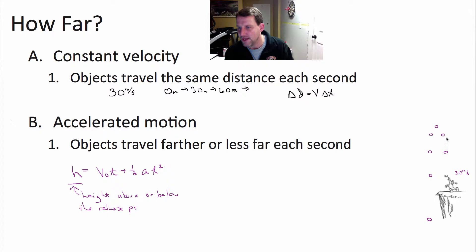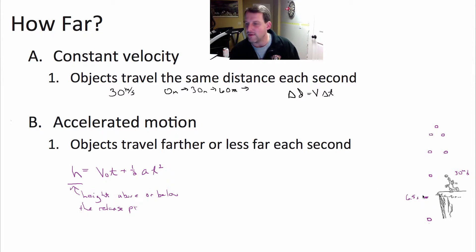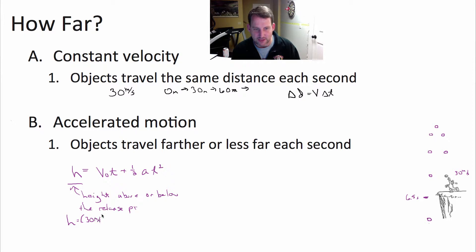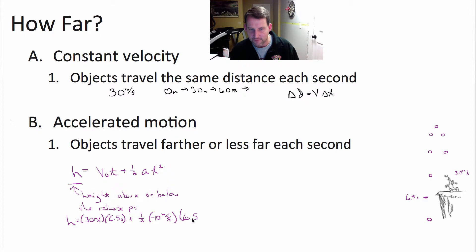So this is one second, two, three, four, five, six. Let's say you want to know something about somewhere around here, which maybe is like 6.5 seconds. If we want to know the height of the ball at 6.5 seconds, we simply plug the time into our equation along with the initial velocity and our acceleration. So the height equals the initial velocity of 30 meters per second times a time of 6.5 seconds, plus one-half times the acceleration of negative 10 meters per second squared times 6.5 squared.